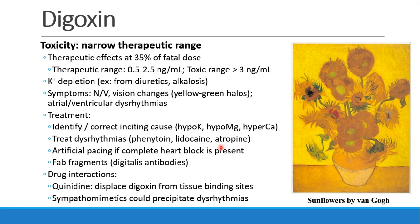The important thing you want to know about digoxin is that it has a very narrow therapeutic range. In fact, at about 35% of the fatal dose is where we're trying to target patients for their therapeutic dose, so you can see we're walking a very fine line. The therapeutic range is somewhere between 0.5 to 2.5, with the toxic range above 3.